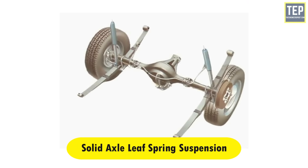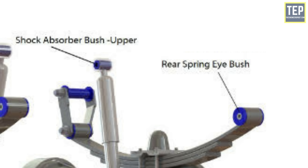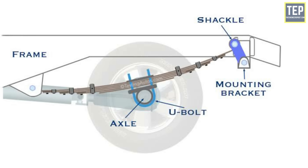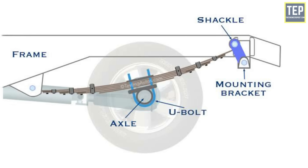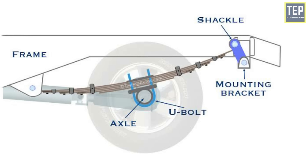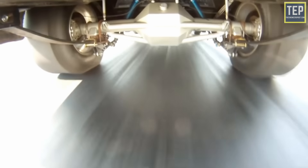In solid axle leaf spring suspension, leaf springs are used as suspension members. The longest spring in the setup bends into a circle to form a spring's eye, which is bolted to the spring hanger. The other end of the spring's eye is attached to a shackle that allows a change in length of the leaf spring when it bends. The shackle includes a rubber bushing to absorb vibrations. The center portion of the leaf spring is attached to the rear axle housing with U-bolts, and a rebound clip holds all the springs together. This suspension is used in trucks intended for more severe operations and high payload rear axles.